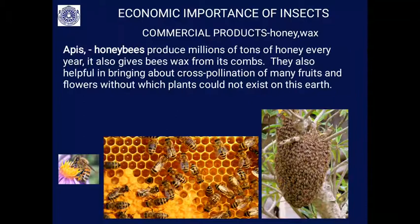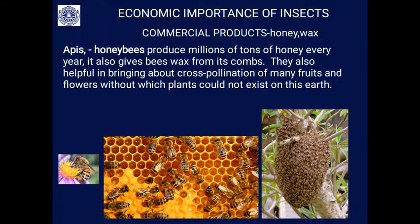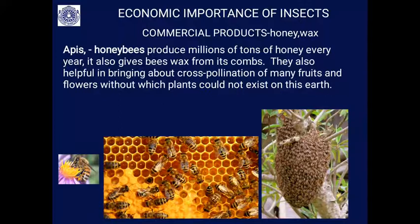You can understand the importance of this very small insect, the honey bee. Honey is used as a natural sweetener and for medicinal purposes since ancient civilization. Wax is a base material for so many creams and ointments and is used for many other purposes. You can see the bee collecting and storing honey — the honeycomb hive is made out of wax combs.